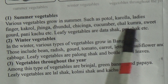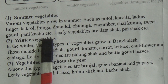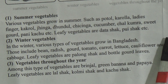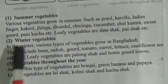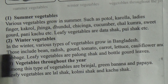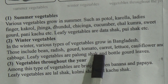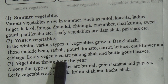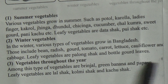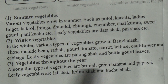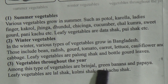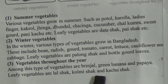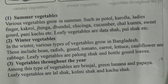Now winter vegetables. In the winter, various types of vegetables grow in Bangladesh. Those include bean, radish, gourd, tomato, carrot, lettuce, cauliflower, and cabbage. Leafy vegetables are palang shag and bottle gourd leaves. Among vegetables throughout the year: brinjal, green banana, and papaya. Leafy vegetables are lal shag, kolmi shag, and kochu shag.